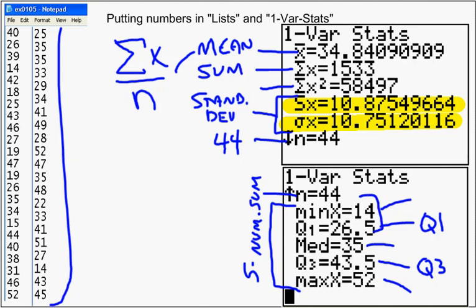So between these two numbers is the lowest quarter of data. Between these two is the second quarter of data. Between these two is the third quarter. And this is the highest quarter of the data.